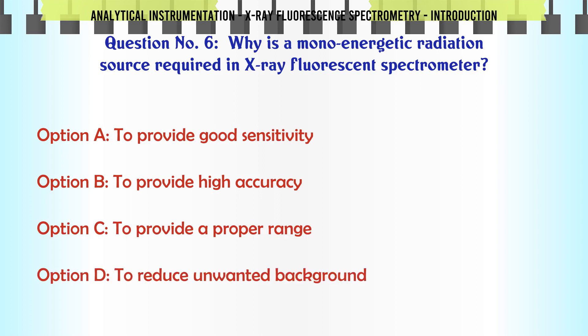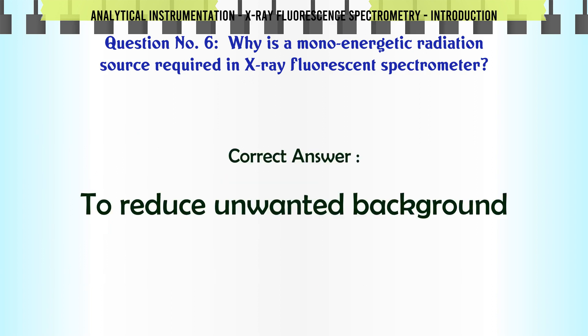Why is a mono-energetic radiation source required in X-ray fluorescence spectrometer? Options: a. To provide good sensitivity, b. To provide high accuracy, c. To provide a proper range, d. To reduce unwanted background. The correct answer is: To reduce unwanted background.